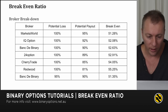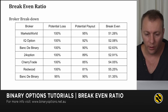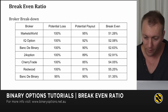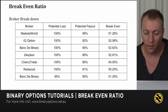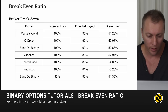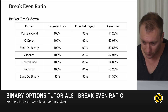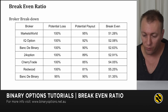Then we have IQ Option, BankToBinary, 24option, and the worst being Redwood. When choosing a broker, the potential payout is a huge consideration. Trading at a place like Redwood means you need a higher margin of wins just to get past the break-even ratio. If a broker like BankToBinary offers 5% insurance on a trade, the potential loss is 95%. With a potential payout of 90%, the break-even ratio drops right down to 51%, compared to 52% without insurance.